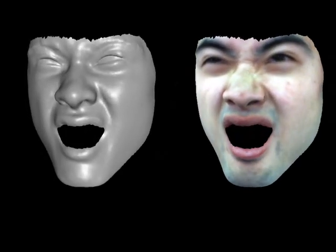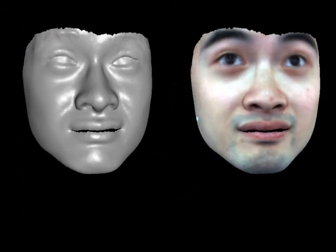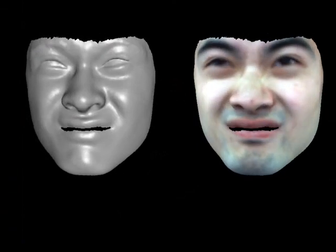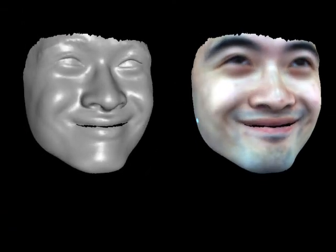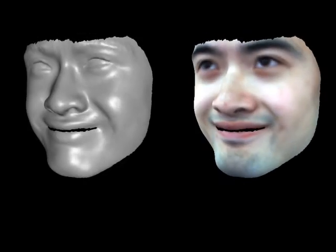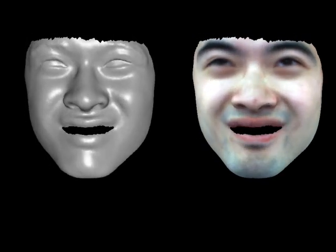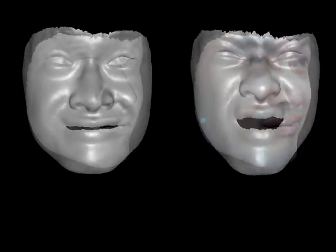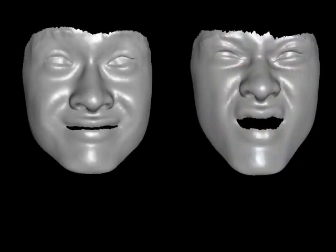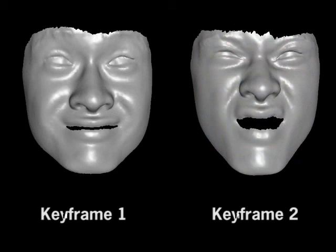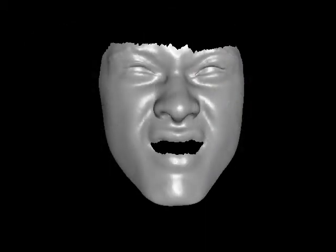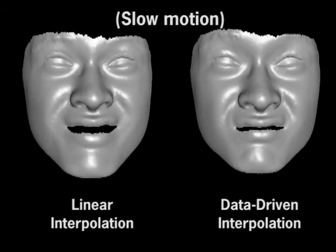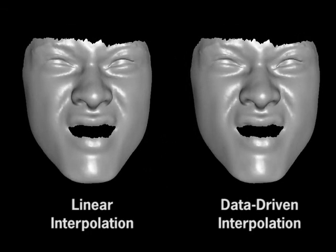One way to animate the captured face is to use video texture techniques to automatically generate new face sequences from the input. By changing the frequency of transitions between expressions, we can make the face more dynamic. We can also use control points to segment the face into regions that can be animated separately, then blended into a single animation. We have also created a keyframe animation tool. The user creates keyframes with our editor, and our tool fills in the intermediate frames using data from the input sequence. Compared to linear interpolation, our data-driven technique can produce motion that looks more natural.